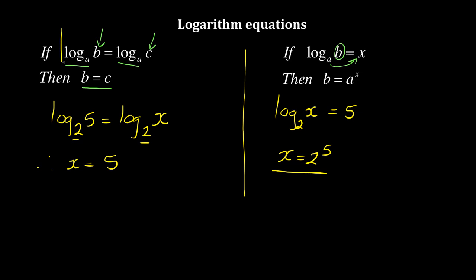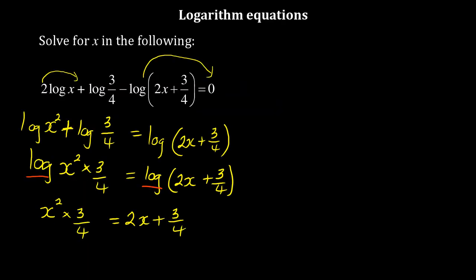I'm using the first rule. If you remember, log base a of b equals log base a of c, I can drop the logs. I'm not cancelling, just dropping the logs, which means b equals c, similarly in this case.